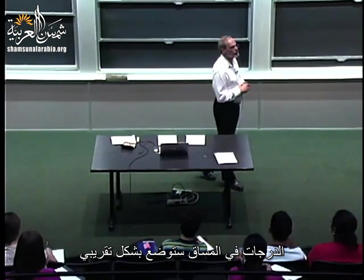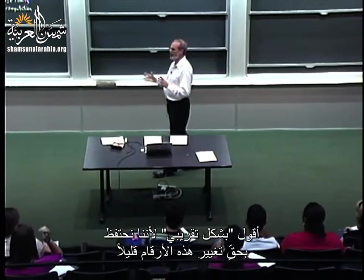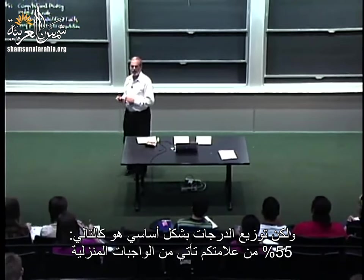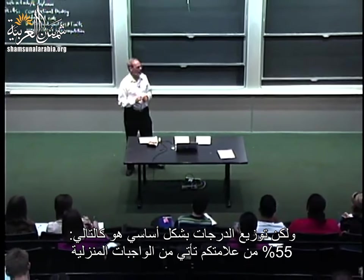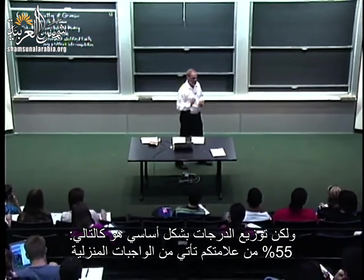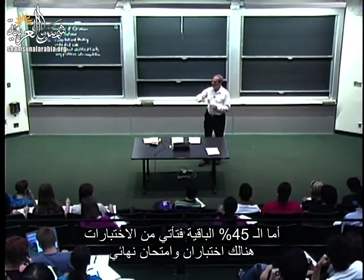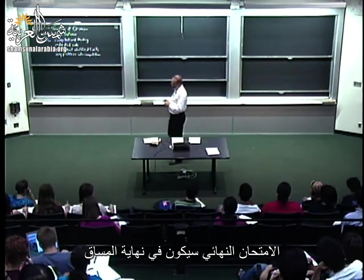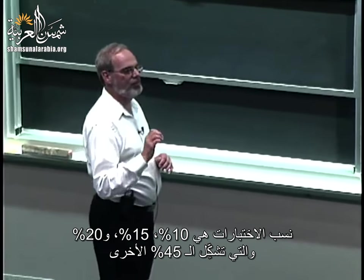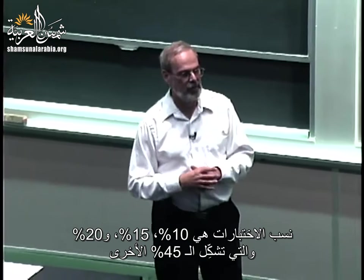The grades for the course will be assigned roughly in the following percentages. 55% of your grade comes from the problem sets. The other 45% comes from the quizzes and a final exam — two quizzes and a final during final period. The quiz percentages are 10%, 15%, and 20%, which makes up the other 45%.